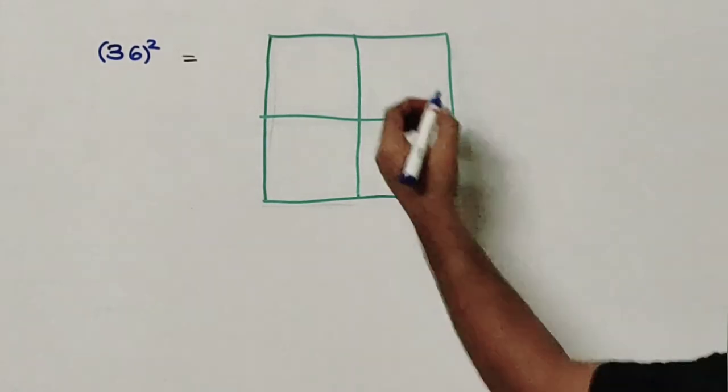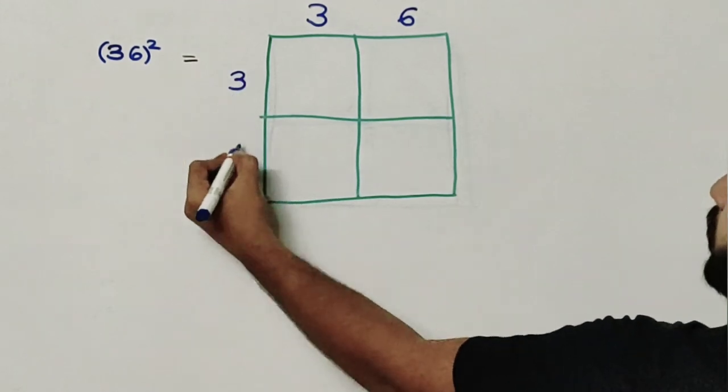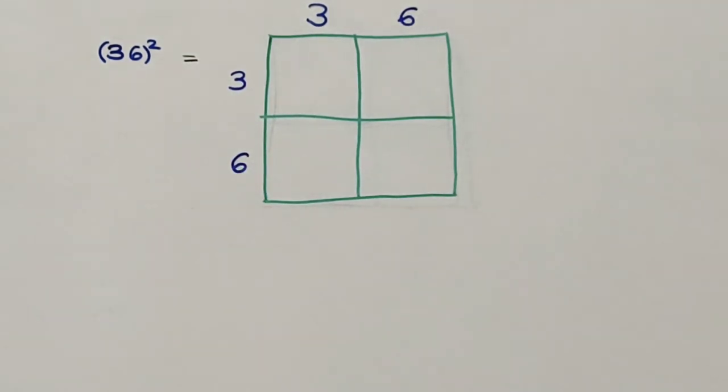So we will write three here, six here, three here, six here, and then we will multiply each one of them.